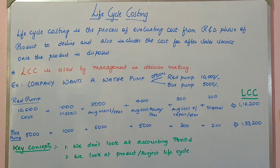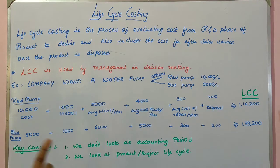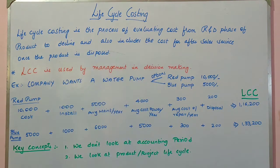Life cycle costing is a process of evaluating cost from the research and development phase — that is from the idea generation phase — till the ultimate removal of the product from the market. That cost is generally termed as life cycle cost. So life cycle costing covers from the R&D phase till the ultimate removal of the product from the market. Even after a product is removed from the market, you have to provide after-sales service to the product.